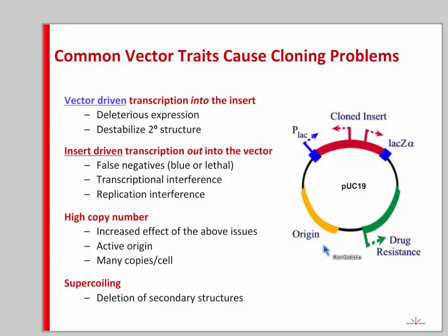PUC19 has a very high copy number, which amplifies all other issues. Anything difficult to clone at single copy is even harder at multiple copies. PUC19 and similar vectors are supercoiled, and if you have DNA with repetitive regions or long tracts of a single base type — a poly-A tract, for example — the supercoiling can cause those structures to pop out of the plasmid and be removed by recombinases, so supercoiling itself causes parts of your insert to be deleted.